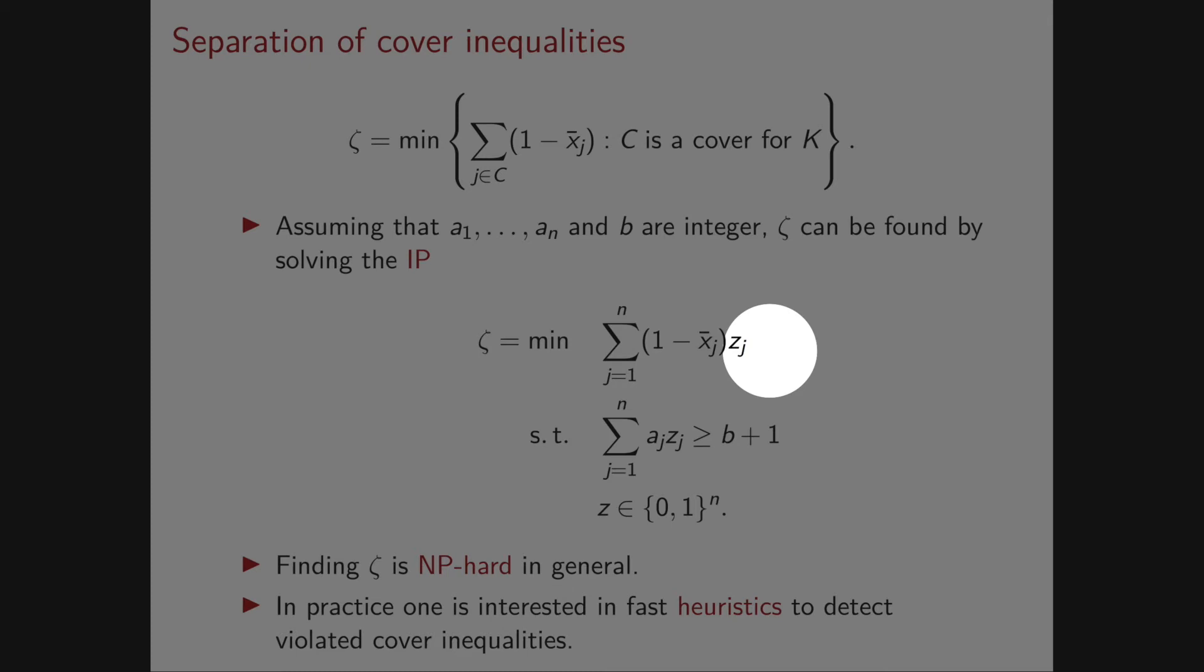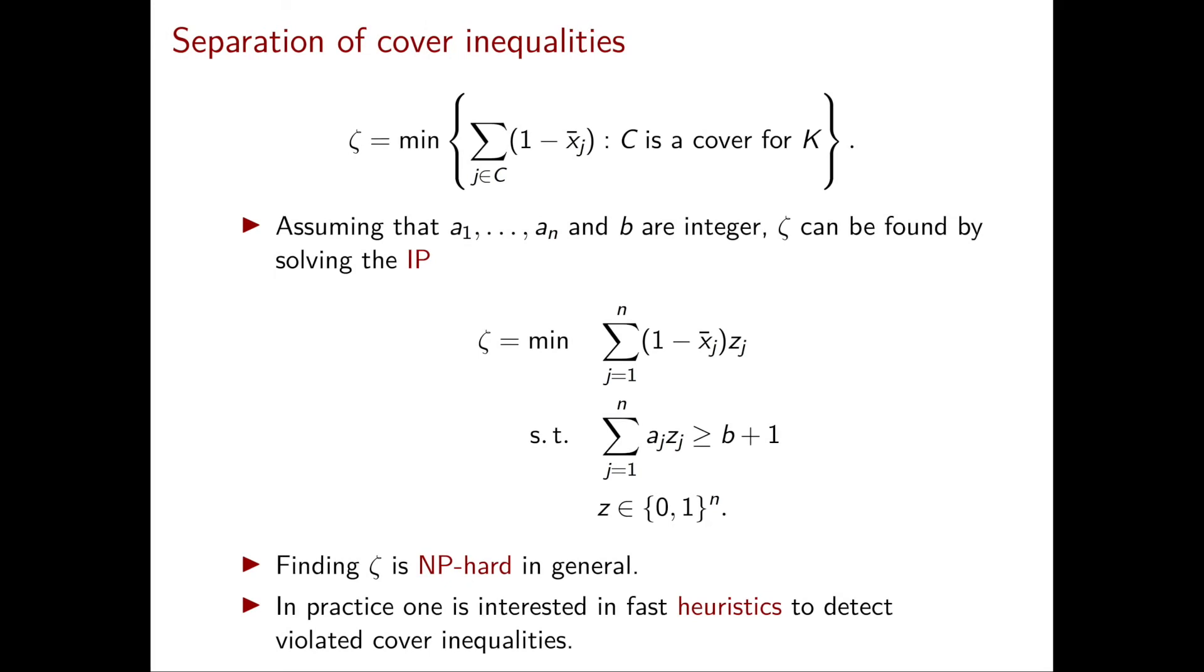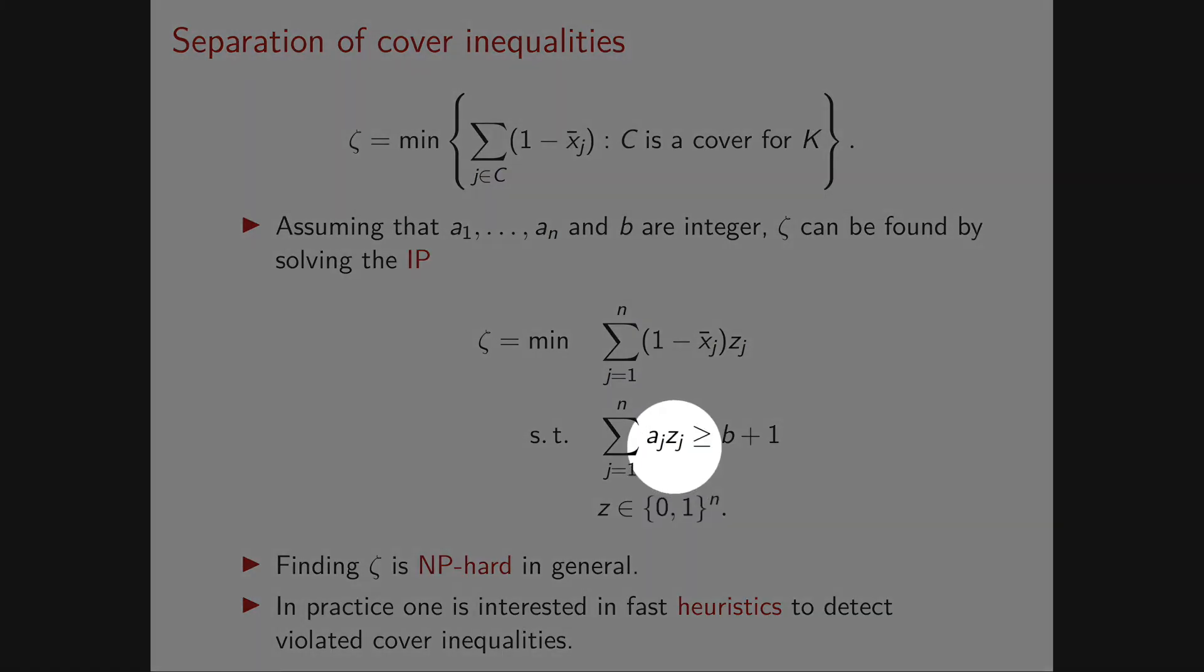So zⱼ will filter out all the j's that are not in C, and we obtain exactly this sum. Then, z is binary, of course. We only need to encode the fact that the zⱼ's with zⱼ = 1 correspond to a cover.